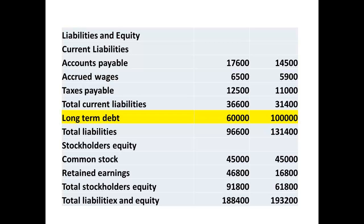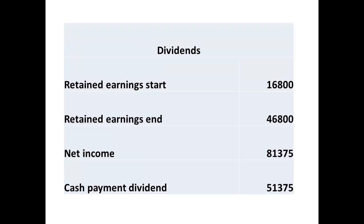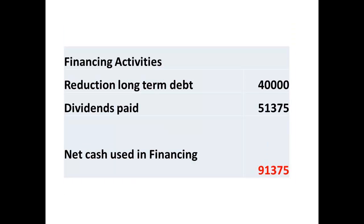Finally, we look at financing activity. The balance sheet tells us that long-term debt was reduced from $100,000 to $60,000, so a reduction of $40,000 was made as a financing activity during the year. To determine dividends paid, we look at the change in retained earnings at the start and end of the year, subtract this from the net income, and the remainder is the cash payment made as a dividend. We now have a figure of $91,375 for financing activities — this is a cash outflow.